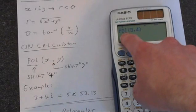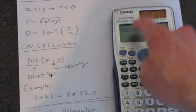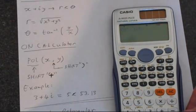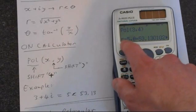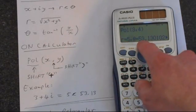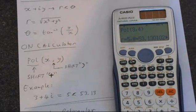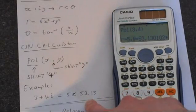And so we've got pol, 3, 4, and then press equals, and that gives us r as 5, and the angle theta of 53.13 degrees, which is what we expect.